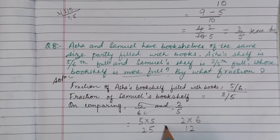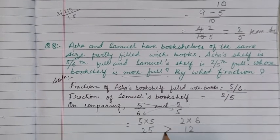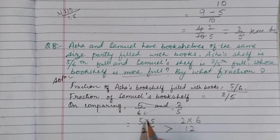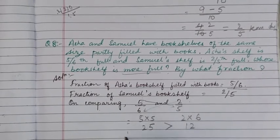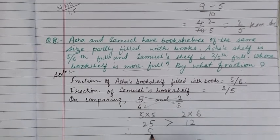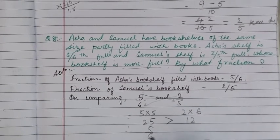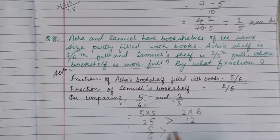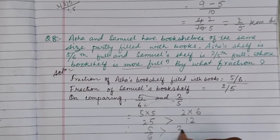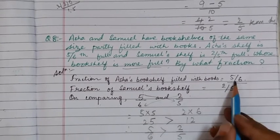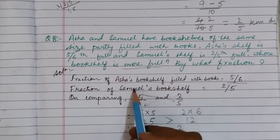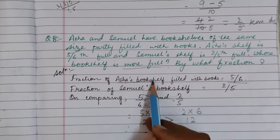Which one is greater — 25 or 12? 25 is greater, and on this side we are having 5/6. So we have got 5/6 is greater than 2/5, and 5/6 is Asha's bookshelves.